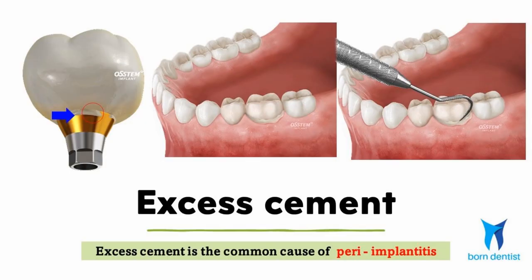One other important issue worth mentioning is the problem of excess cement associated with cementable crowns. As the soft tissue attachment forming the biological width around an implant is weak compared to natural teeth, any excess cement can easily penetrate under the gums, causing inflammation that is difficult to clean. It is believed that excess cement is the most common cause of peri-implantitis.